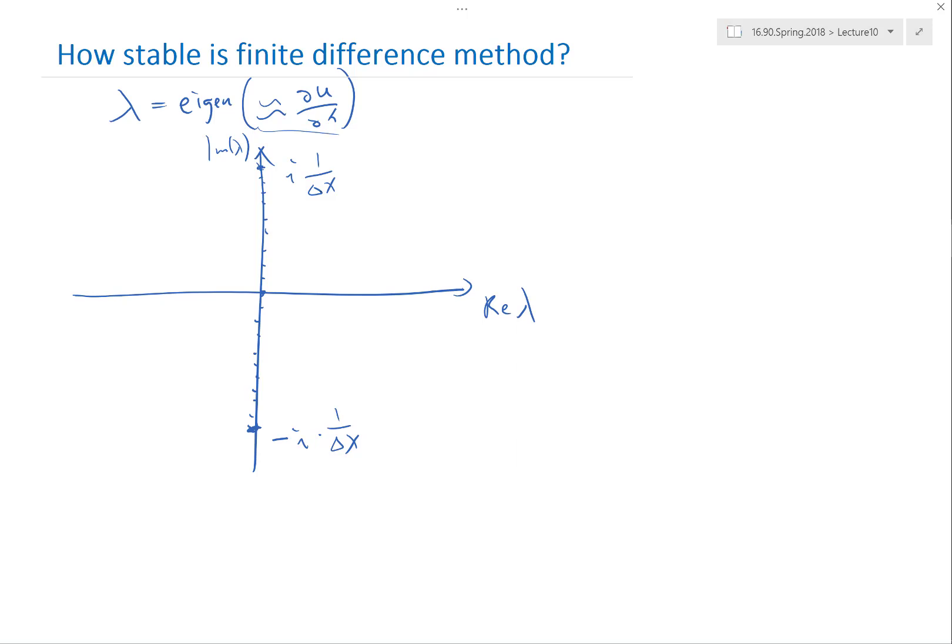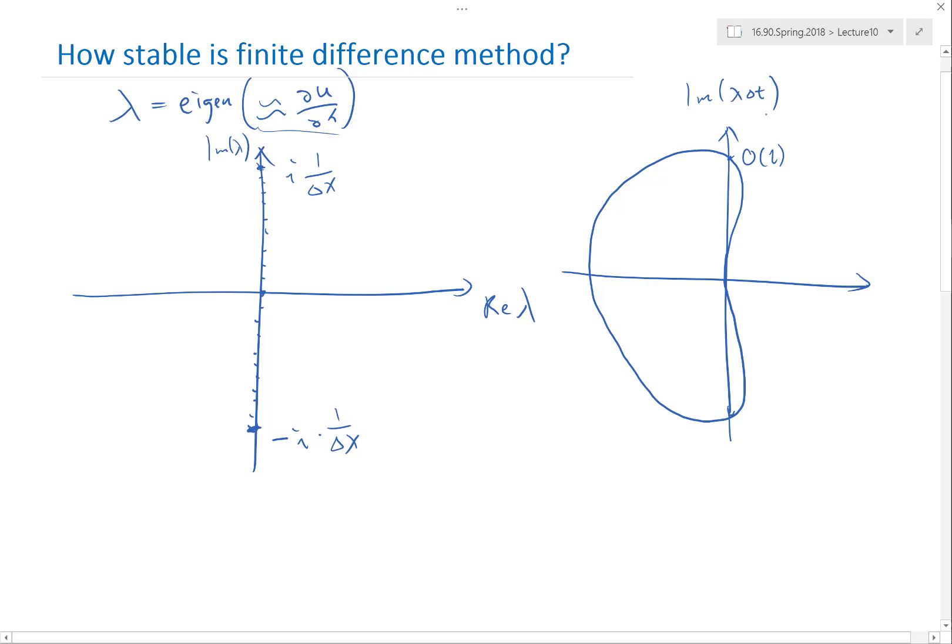So if you want an explicit time integrator, you'd better make sure that the stability region, first of all, let's say if I have a stability region of a pretty good explicit integrator, the stability region usually looks like this. And for example, this is on the order of 1, maybe 2 or 3, in the space of imaginary lambda delta t and the real of lambda delta t.